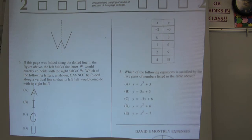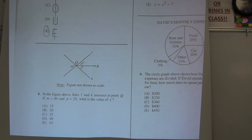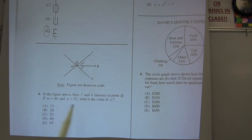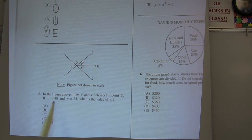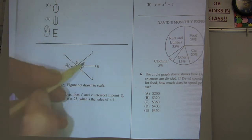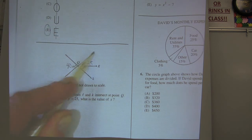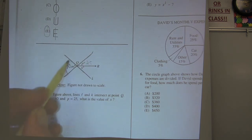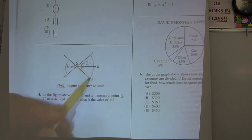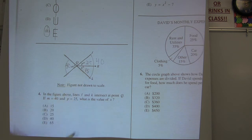Okay, moving down to number 4. It says in the figure above, the lines L and K intersect at point Q. It says if M equals 40, I'm going to go over here and slip in a 40. And it says if P equals 25, what's the value of X? Okay, piece of cake. Here we go. If this is 40 right here, look at this line and this line. Intersecting lines form congruent vertical angles. This angle is 40, so this angle over here is 40. So this guy's got to be 25 plus 15 to get me 40. So X must be 15.